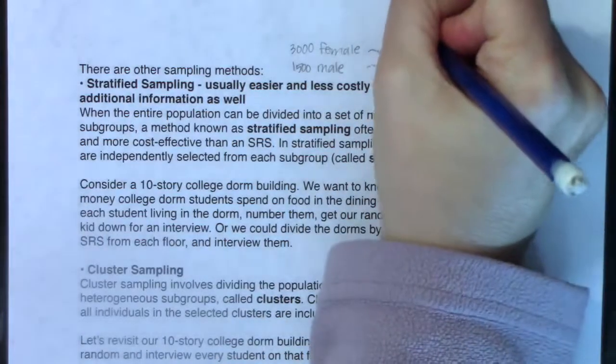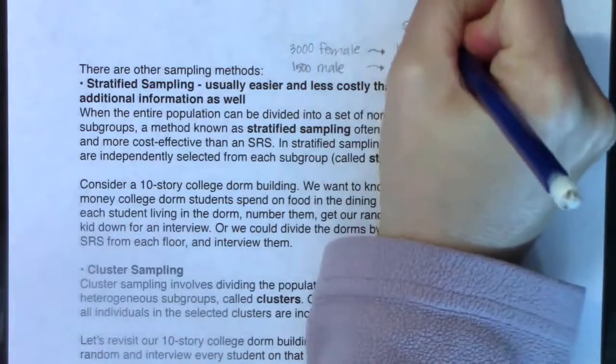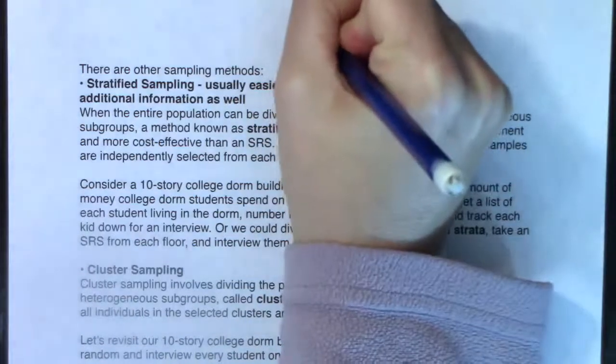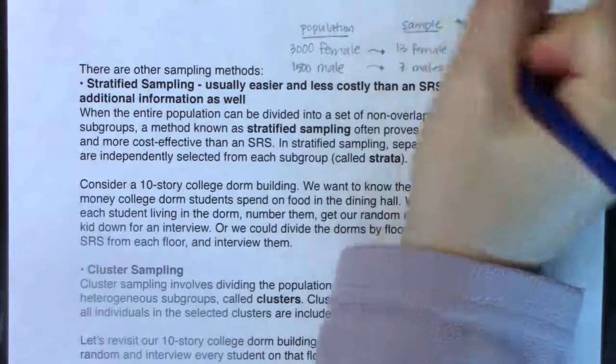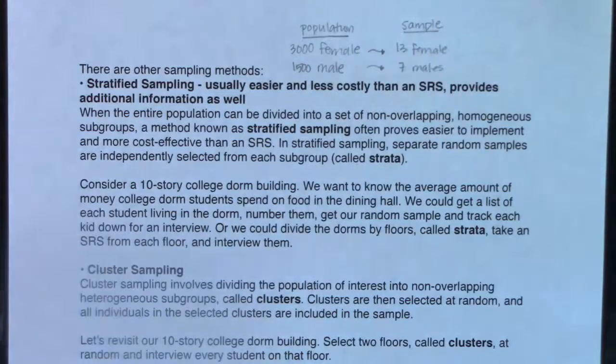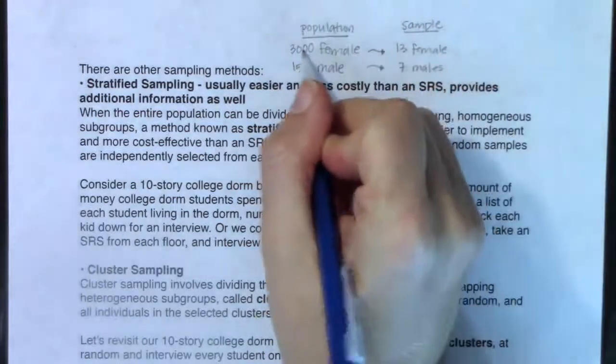If I take 3,000 and divide it by 4,500 students, I have about 67% or two-thirds female. If I want that true of my sample, if I multiply that by 20, that means I need 13.33 females. I can't get 13.33, but if I truncate that, I could get 13, and then by default I'd want 7 males.